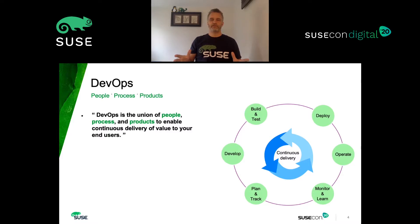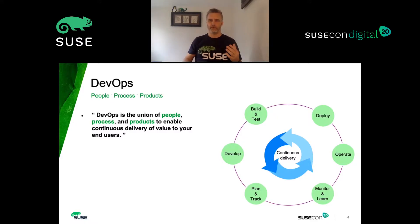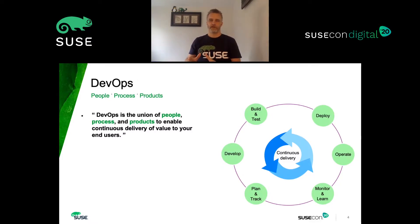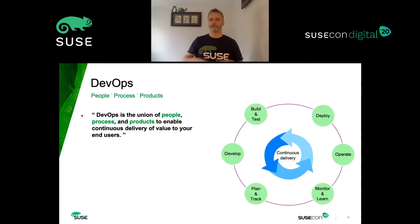Ultimately what we are trying to achieve is to get people to work together with common processes to enable continuous delivery — continuous delivery of value that gets out to the market to our customers. In doing this we want to be innovative and increase the speed to market. It's also about creating a feedback loop to be able to constantly improve our products and solutions in a loop that is always evolving.